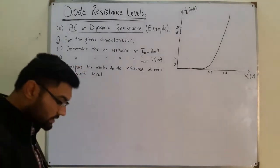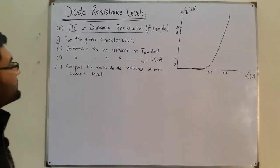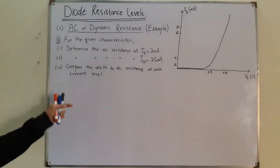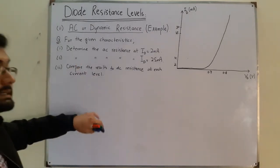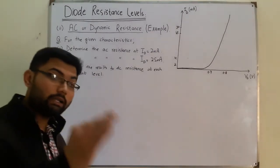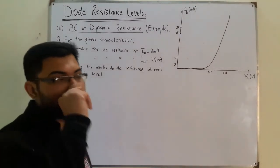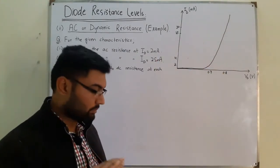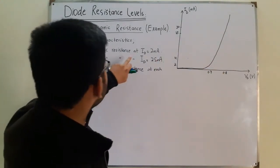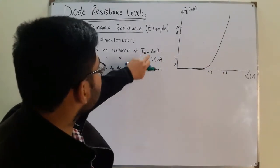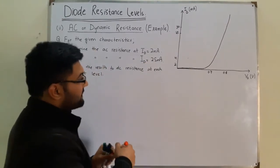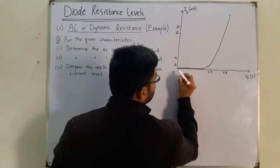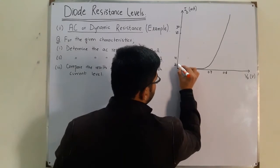The method we discussed in the last video is that to find the resistance, at the point where we have to find the resistance, we draw a tangent line at that point. So here we have to find it at ID corresponding to 2 milliampere, so this is the point at 2 milliampere.